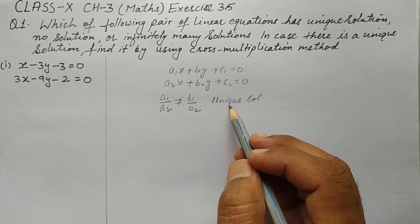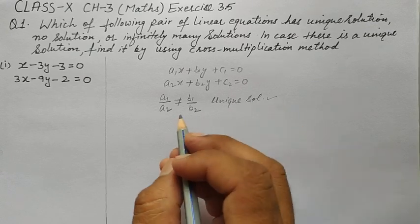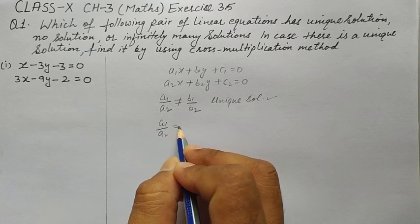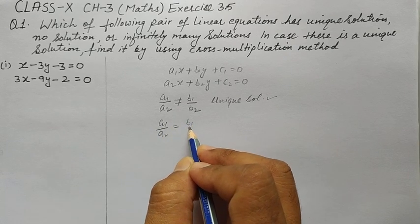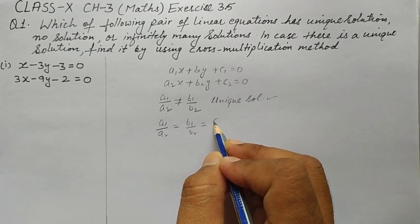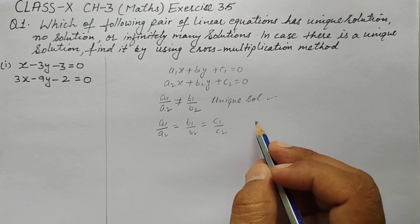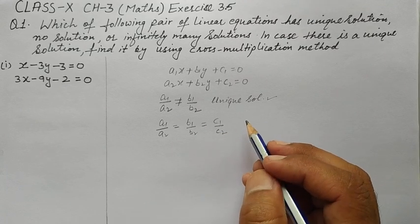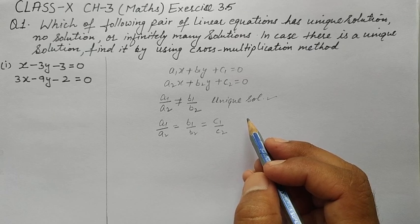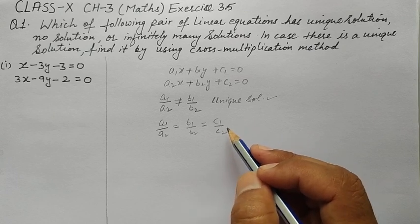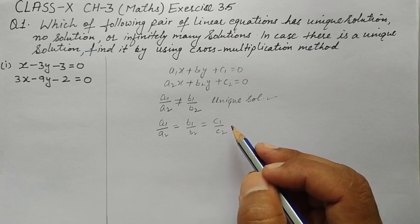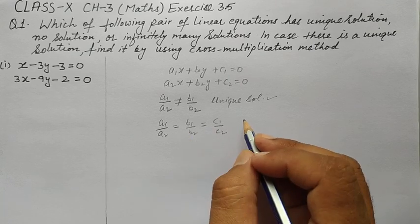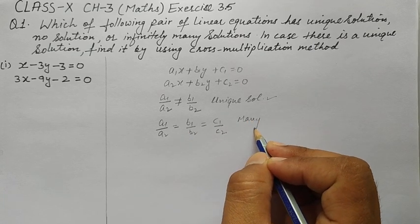When a1/a2 = b1/b2 = c1/c2, then there are infinitely many solutions. In this case, the lines are coincident and the pair of equations will have infinitely many solutions.